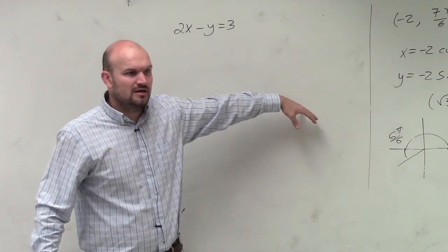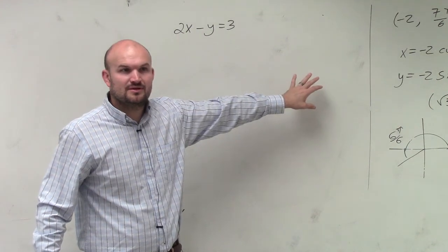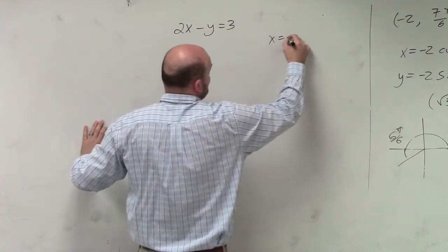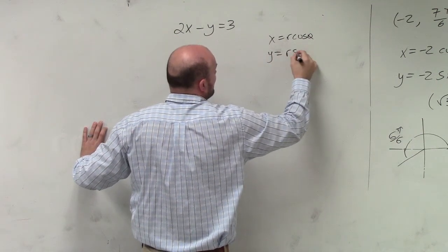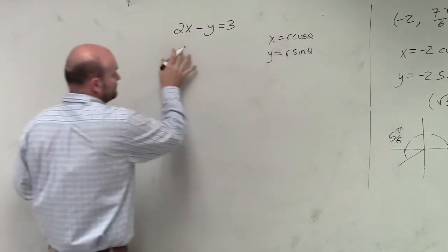x equals r times cosine of theta. y equals r times sine of theta. So watch.